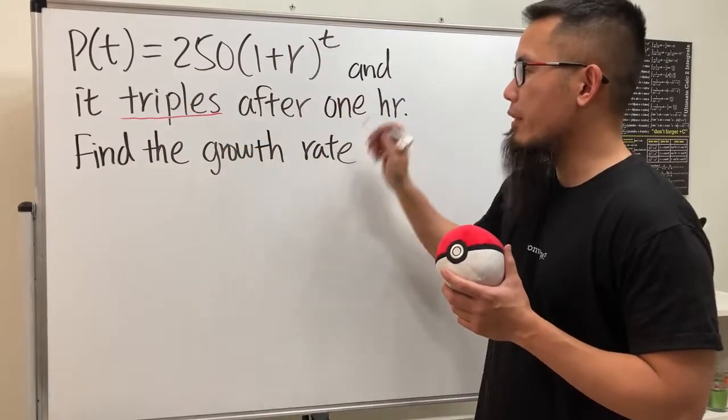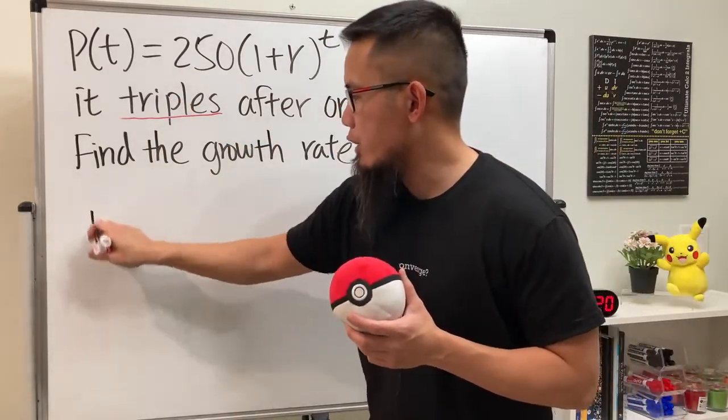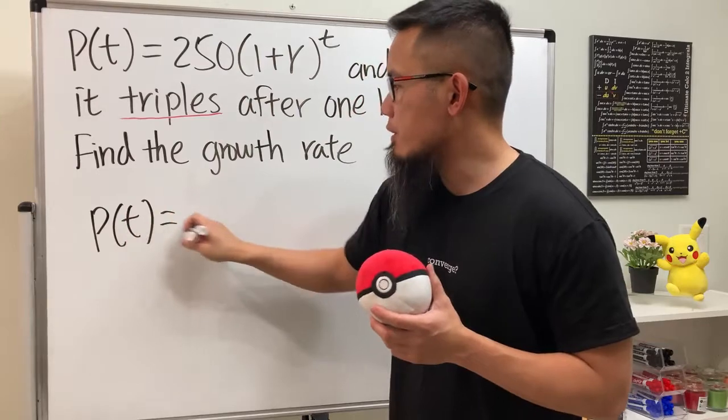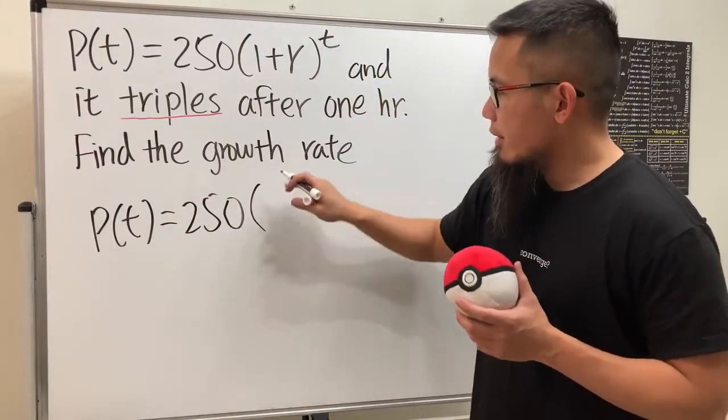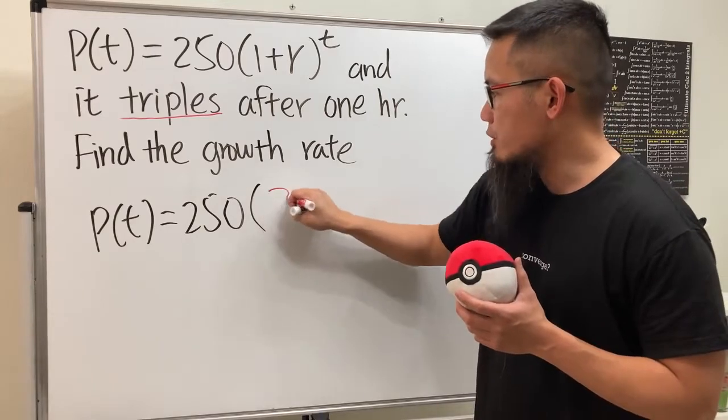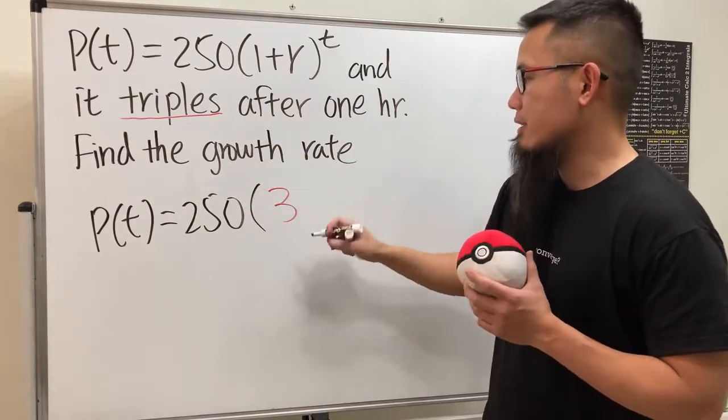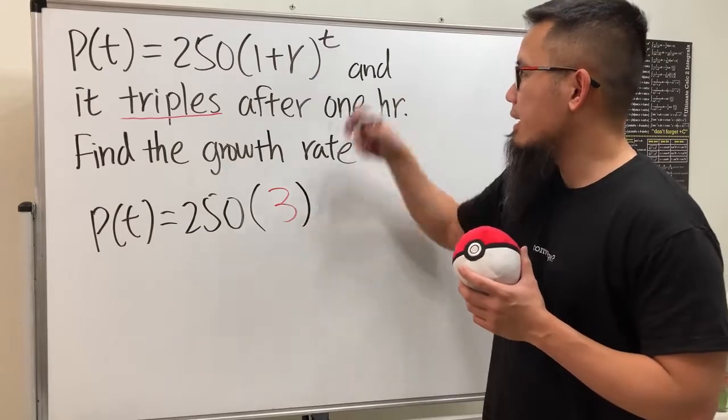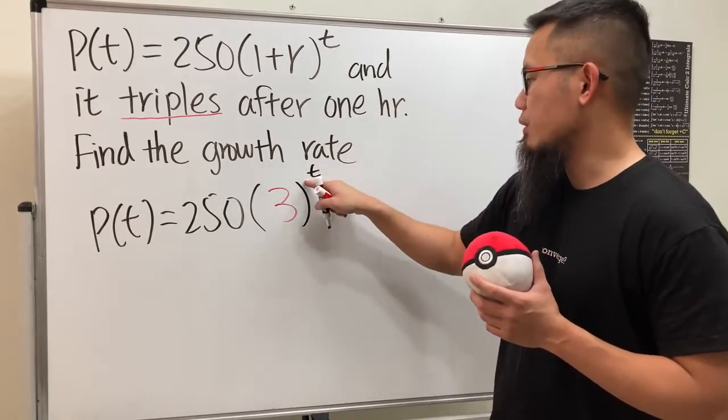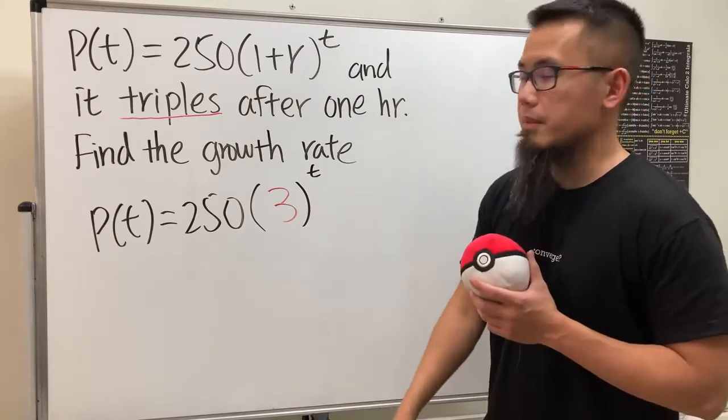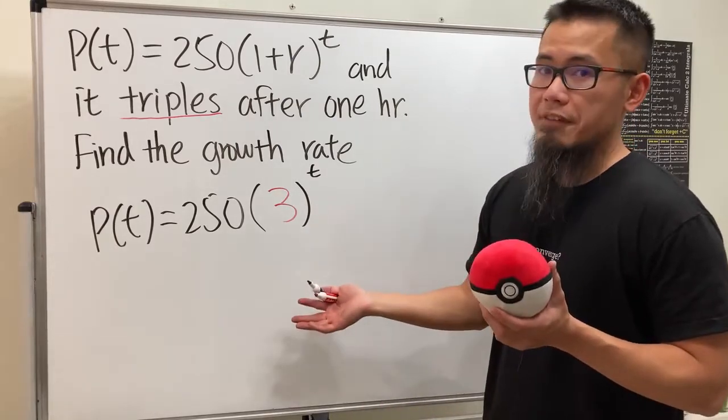It says triple after one hour, so you can look at the equation as P(t) equals the initial amount which is 250, and then the base is just going to be 3 because triple means the growth factor equals 3, raised to the t. It says after one hour so it's technically t over 1, but that doesn't really matter. That's the equation we have.